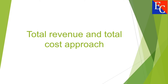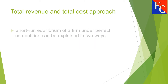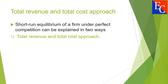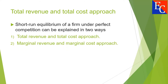The short-run equilibrium of a firm under perfect competition can be explained in two ways: 1. Total Revenue and Total Cost Approach, and 2. Marginal Revenue and Marginal Cost Approach.